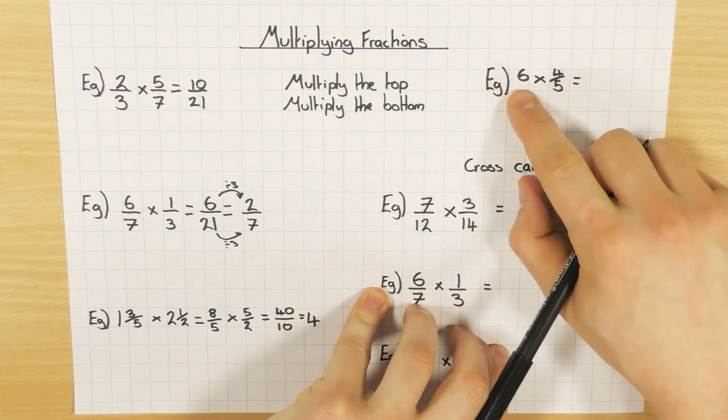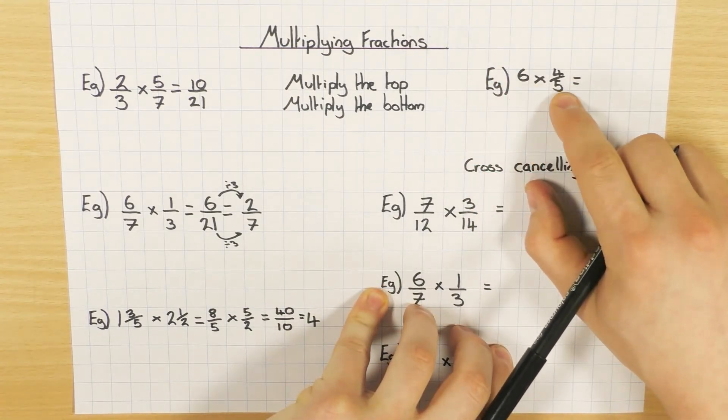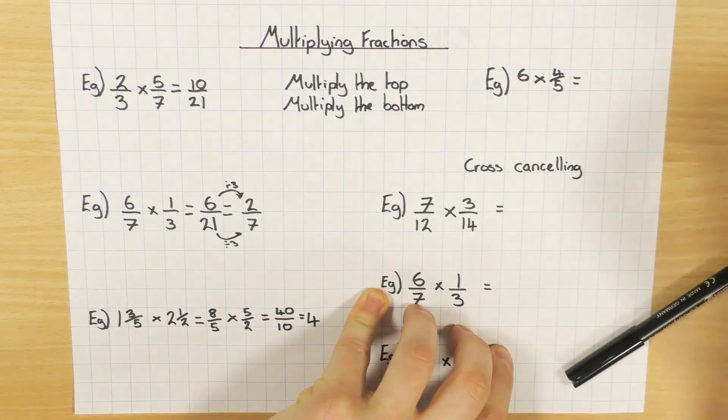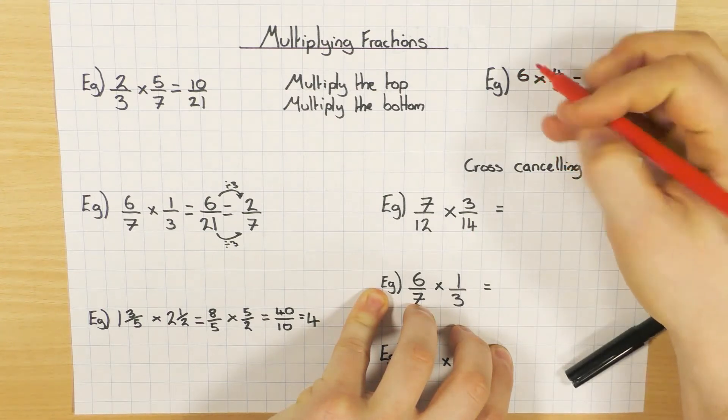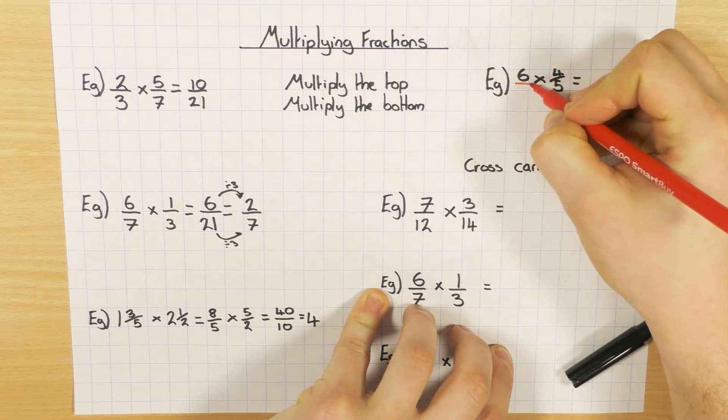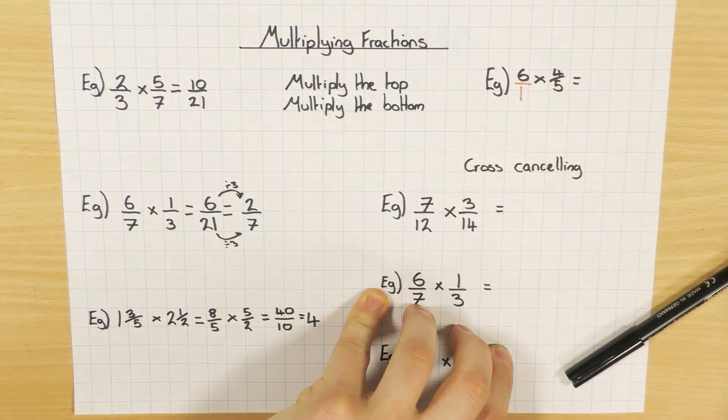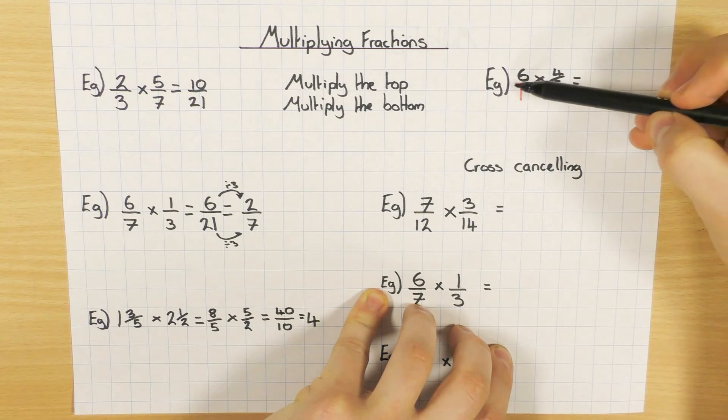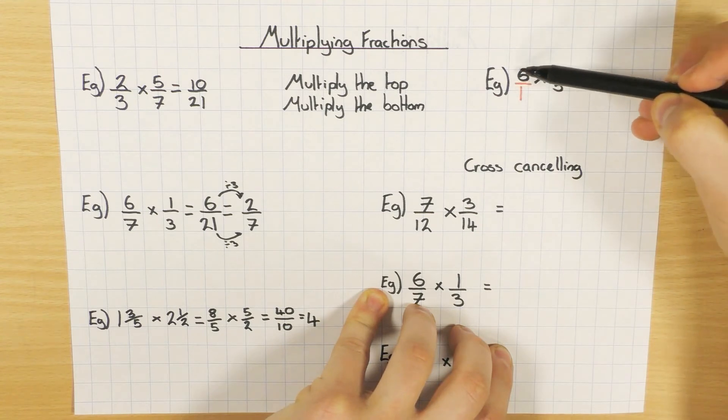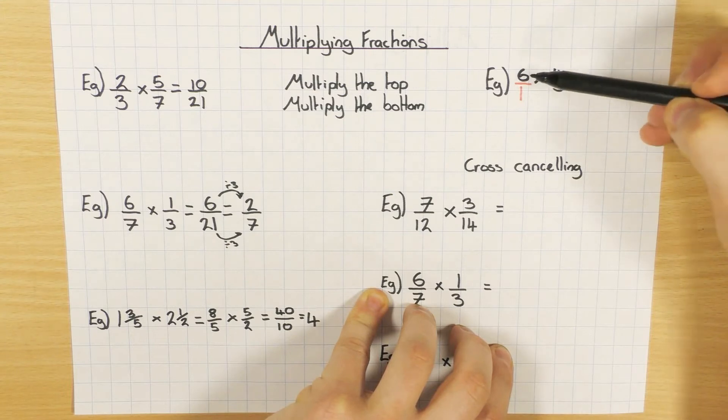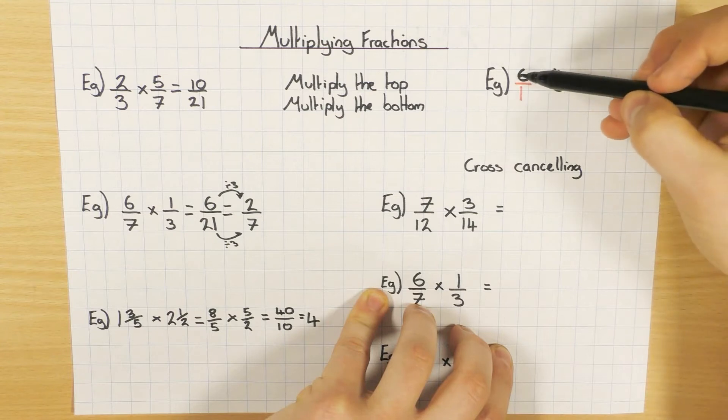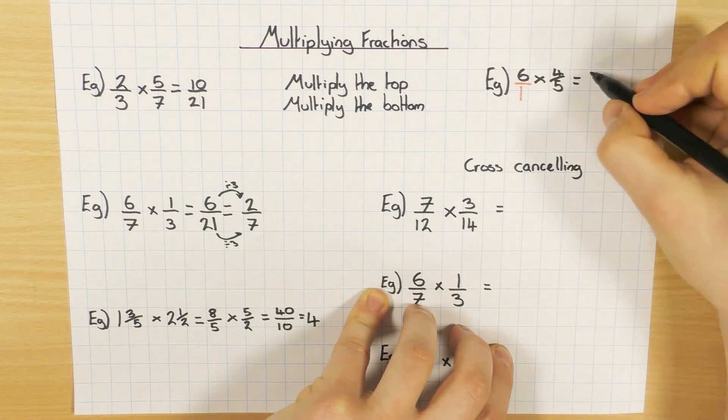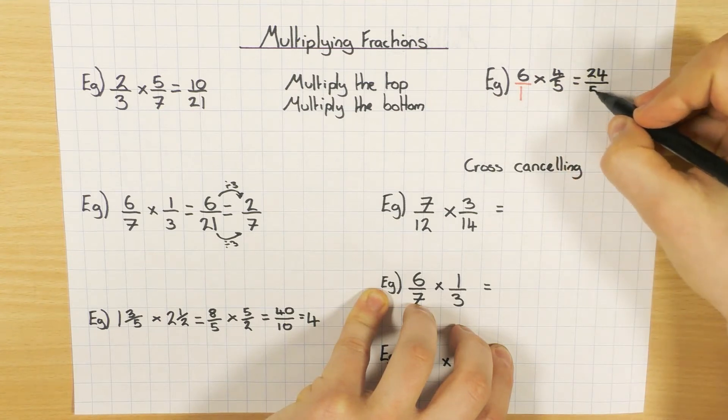Now you might have something like this, where you have a whole number times by a fraction. Don't be put off by that. All we do is we look at the whole number and we convert that into a fraction, which is simply 6 over 1. Why can we do that? Well, 6 divided by 1 is just 6. You're not actually changing the question, you're just converting it into a fraction. So 6 divided by 1 is just the same as 6, but because it's now a fraction, I can multiply the top. So 6 times 4 is 24, and then 1 times 5 is 5.